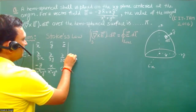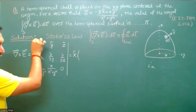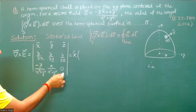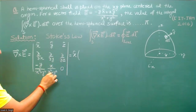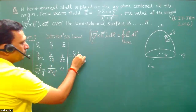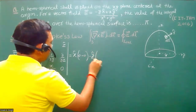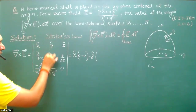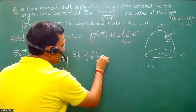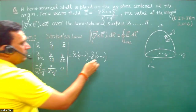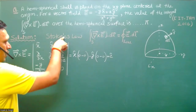Expanding the determinant: for the x̂ component, delete the first row and first column and operate on 0 — partial derivative with respect to z gives 0, so x̂ component is 0. For the ŷ component, similarly delete the appropriate row and column — partial derivatives again give 0, so ŷ component is also 0.